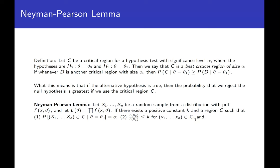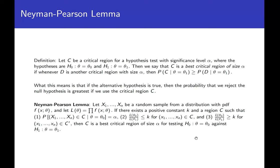The third condition: the likelihood of theta naught over the likelihood of theta one is greater than K if we're not in the critical region — exactly the reverse. If you can find C and positive K satisfying all three conditions, you're guaranteed to get a best critical region of size alpha for the simple hypothesis test of theta naught against theta one.